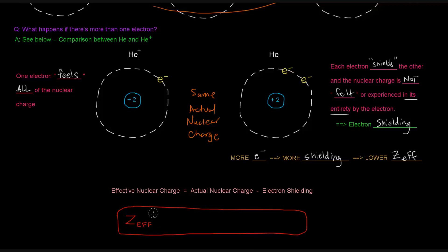Z_eff, representing effective nuclear charge, equals Z actual, actual nuclear charge, minus shielding, minus the effect due to shielding.